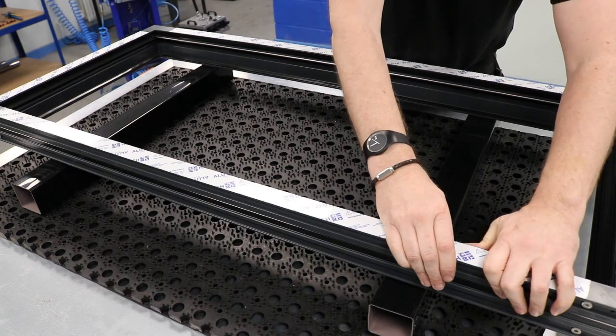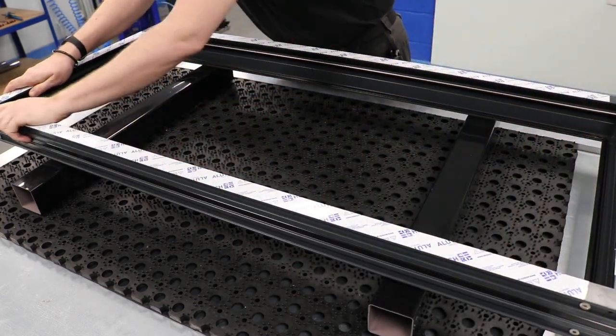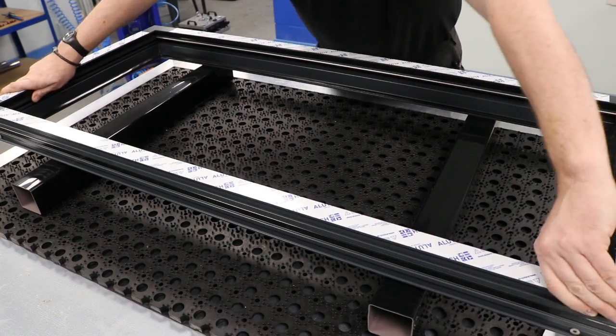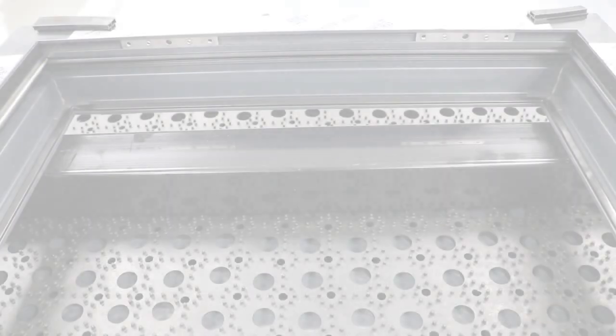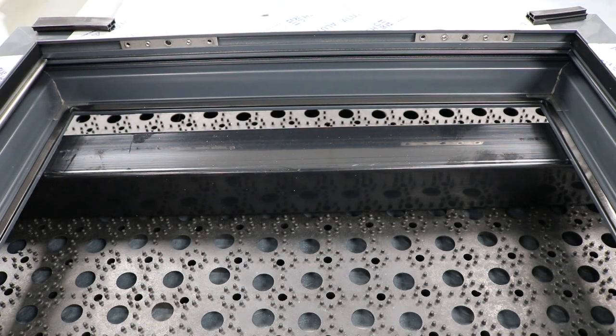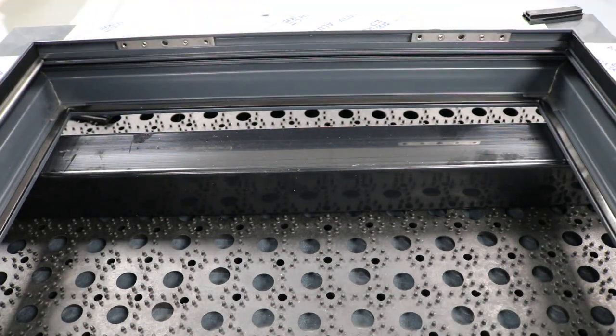Okay, so that's all the gaskets in. The cover gaskets in for the outer frame, it's all done. Cover gasket completed on this side, bottom side, top side and lock side.